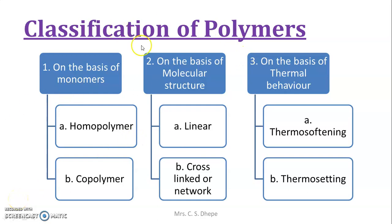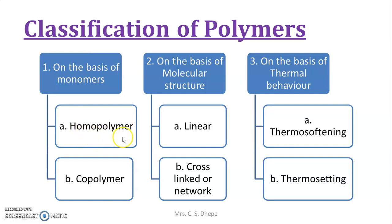Dear students, in the previous video we started the classification of polymers, covering two parts: first, on the basis of monomers, and second, on the basis of molecular structure. On the basis of monomers, we covered homopolymer — where all monomers are identical — and copolymer, where the monomers present in the polymer are of different types.